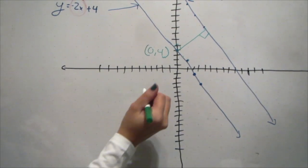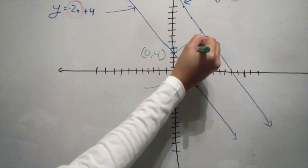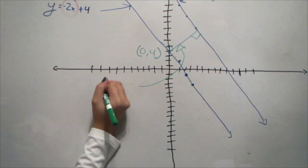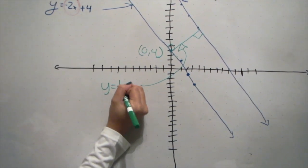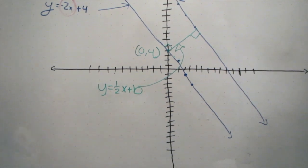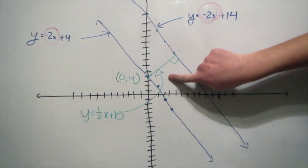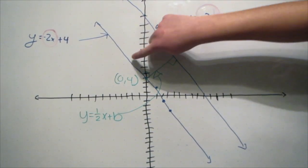The slope is the opposite reciprocal of the two parallel lines' slope. This is because the line in between forms two right angles. The line in the middle is perpendicular to the two parallel lines.